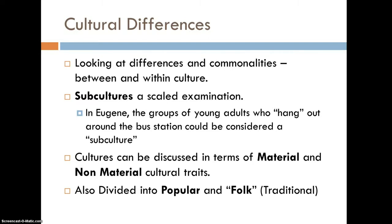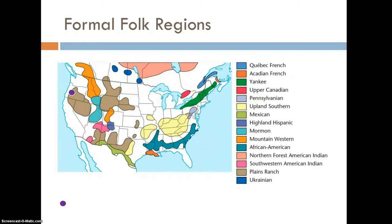We'll look at the idea of popular culture versus folk culture. 'Folk' is in quotes because it's a difficult concept — it could also be considered traditional culture or ethnic cultures, and the book doesn't really go into those differences. We can start by looking at traditional or folk cultures using the idea of folk regions, which are formal folk regions with a core and a periphery.